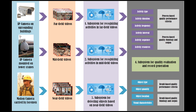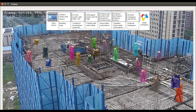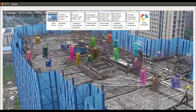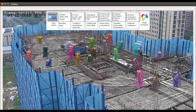Near-field videos are usually shot from a relatively near distance — for example, using motion cameras on helmets. Therefore, near-field videos have rich details to support result-based quality control, while they will not be used for activity recognition.